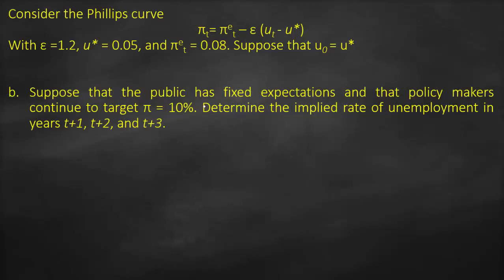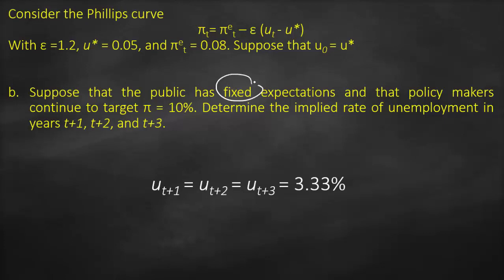The next part of the question: suppose that the public has fixed expectations and that policy makers continue to target an inflation rate equal to 10%. The unemployment rate in T+2 and T+3 will be the same — 3.33% — because with fixed expectations, people don't change their expectations, so unemployment remains constant.